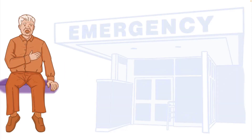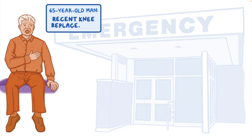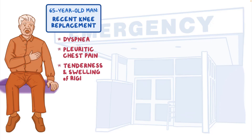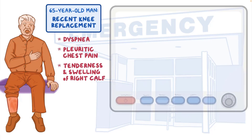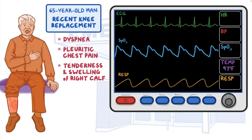Alex, a 65-year-old male who recently underwent a knee replacement surgery, presents with dyspnea and pleuritic chest pain that started a few hours ago. On examination, there is tenderness and swelling of his right calf. Physical assessment reveals a normal temperature, a blood pressure of 140 over 80, a heart rate of 93, and 23 respirations per minute. ECG shows normal sinus rhythm and oxygen saturation is 95% on room air.